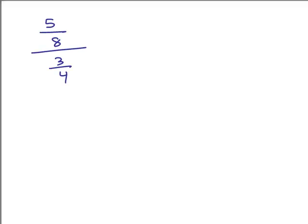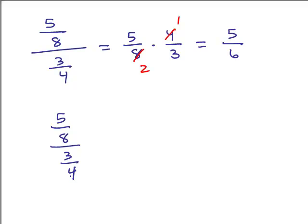Let's end with one easy one. This has a single fraction in the numerator and denominator, so you can just take the numerator and multiply it by the reciprocal of the denominator — that gives 5 over 6. Now using method 2: the denominators are 4 and 8, so the LCD is 8. Multiply the numerator by 8 and denominator by 8. The 8's cancel in the numerator giving 5, and in the denominator 2 times 3 is 6. Same answer — both methods work, whether it's arithmetic or algebra.